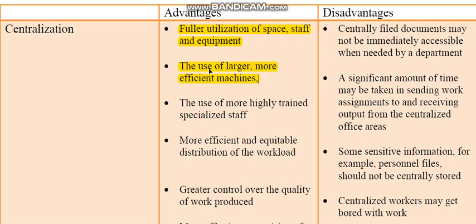Now, what can be some of the advantages of having all equipment and services located in one area of an organization? The first advantage is fuller utilization of space, staff, and equipment. By having all equipment located in one area of the organization, it will allow us to utilize the extra space and staff more efficiently.